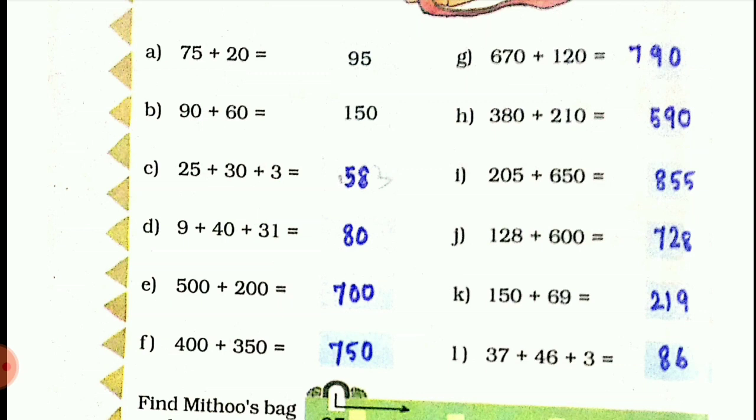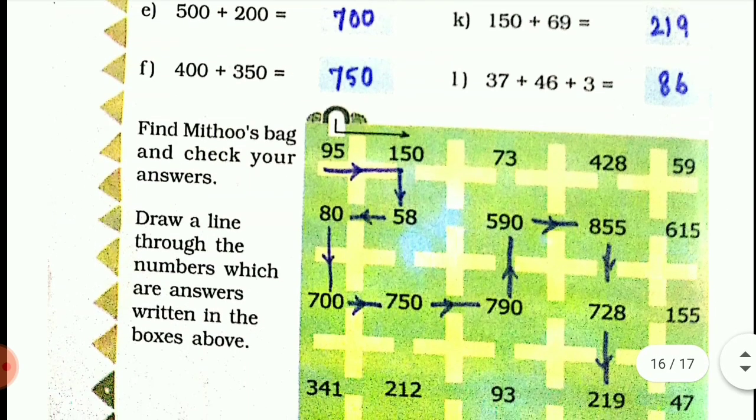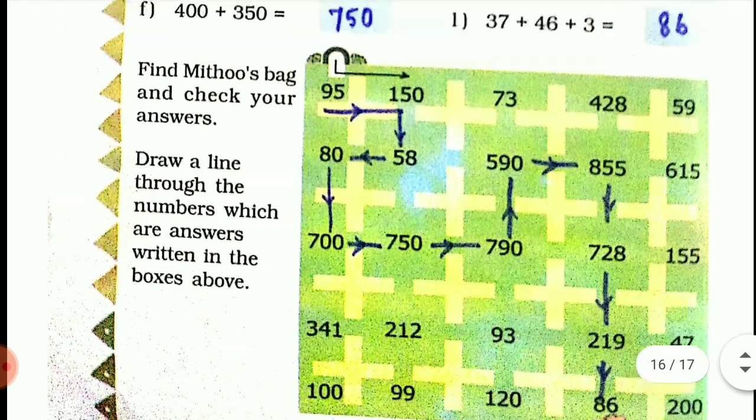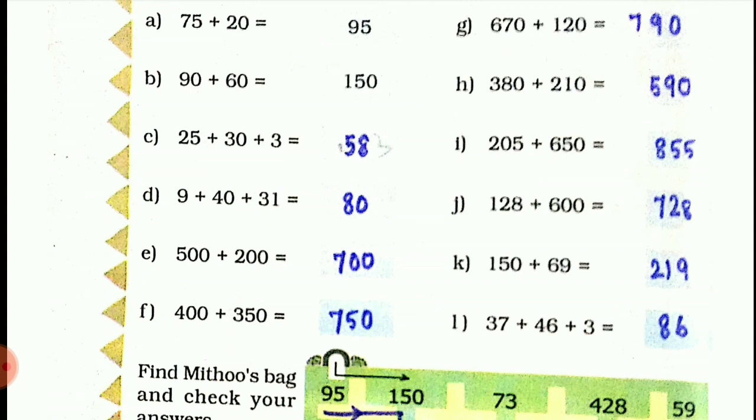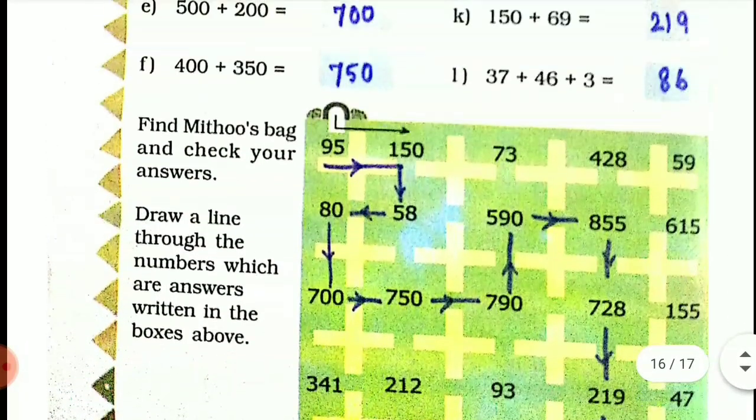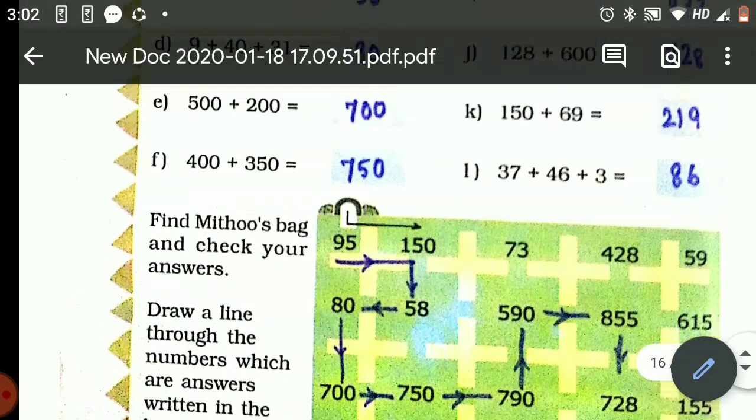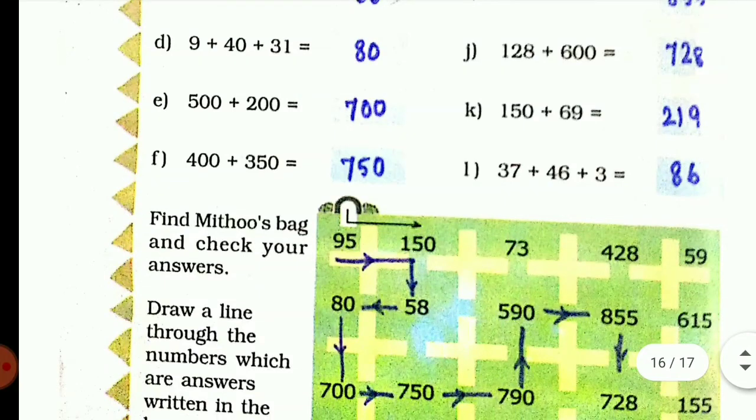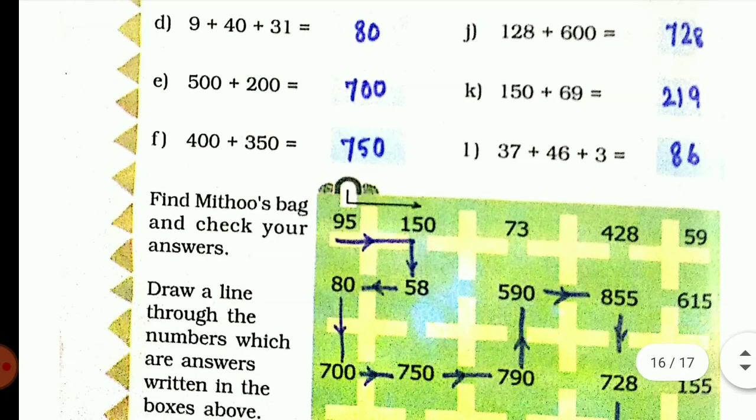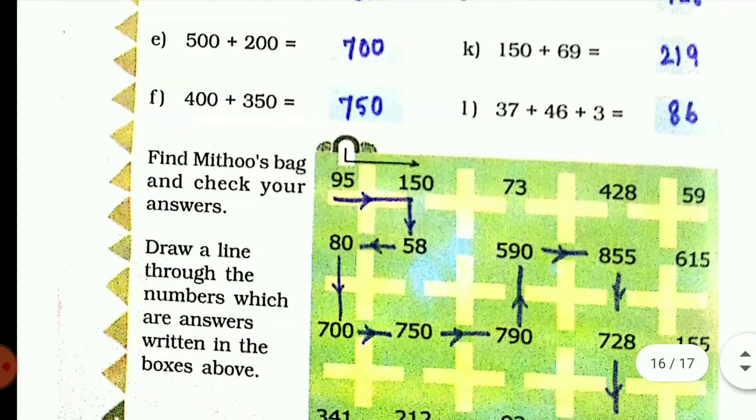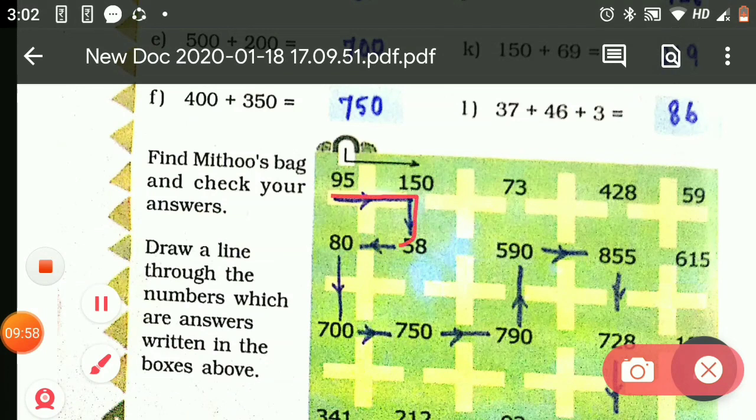So find Mithu's bag and check your answers. Draw a line through the numbers which are answers written in the boxes above. We got the answers from A to L. These answers you have to mark here to find this bag. The first answer is 95, so mark a path. Then 150, so mark a line from 95 to 150. Then the answer is 58, 80, 700, 750. You have to just mark lines from here. Whatever answers you got, just mark it till you reach this bag. So you found the bag here.